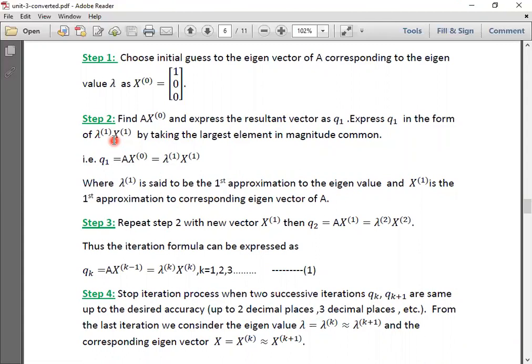Let us see how it can be done in step 2. In step 2, we find A times X⁽⁰⁾. A is the given matrix, X⁽⁰⁾ is the initial vector we have chosen. And we express the resultant vector as some other vector Q₁. Then we express Q₁ in the form of lambda X, that is taken as lambda₁ X₁.